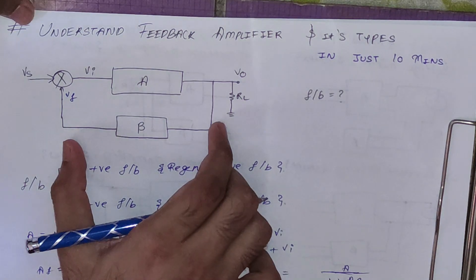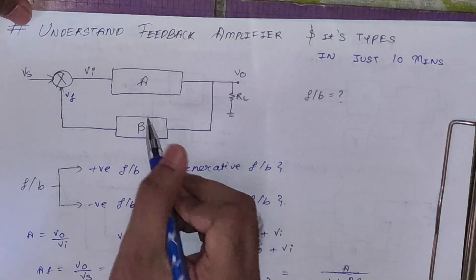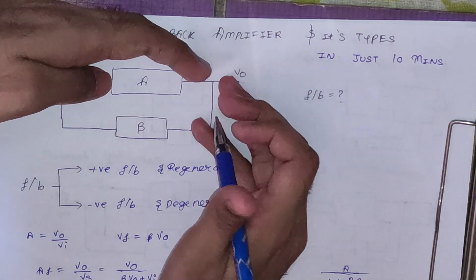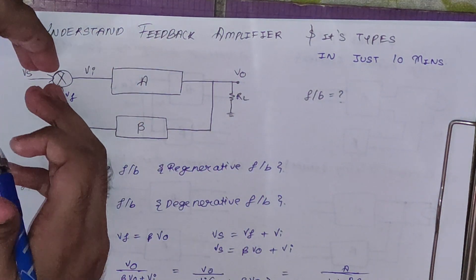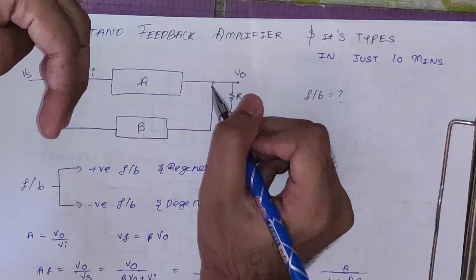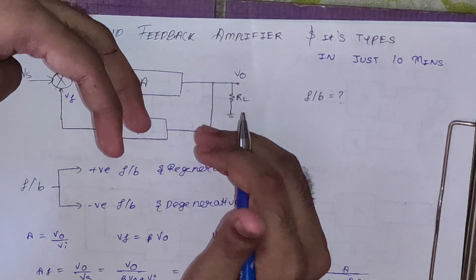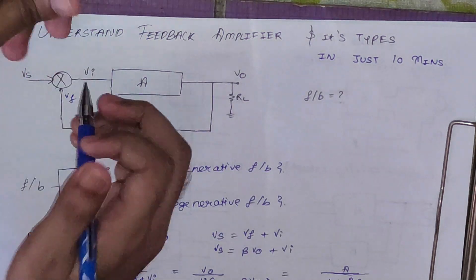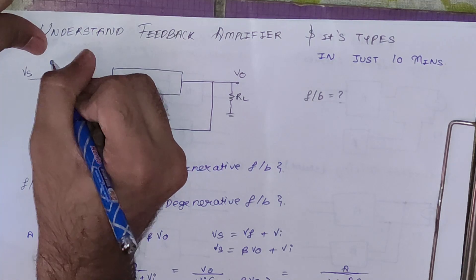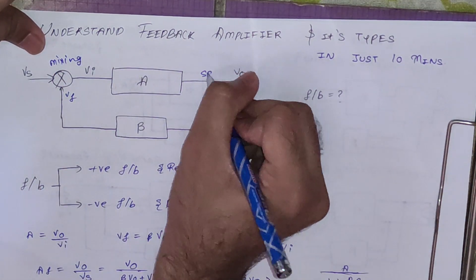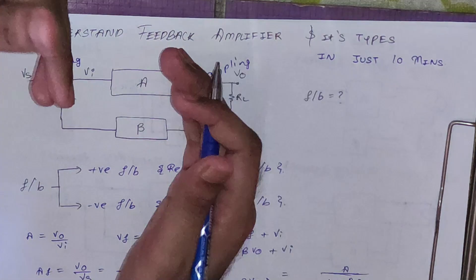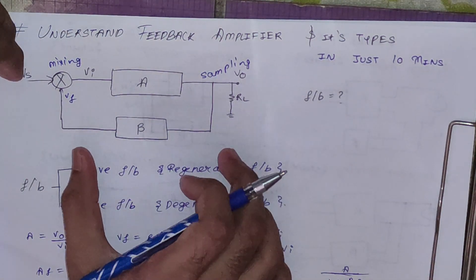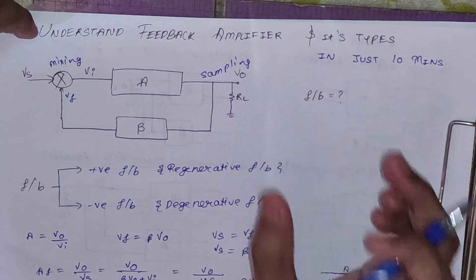You can see in this feedback connection diagram, there is a feedback factor. From this terminal we are taking some part of the output voltage and giving it to the input through this feedback factor. The process used to get the output voltage is called sampling, and the process where we add the output voltage to the input is called mixing. We will see all types of mixing as well as all types of sampling.